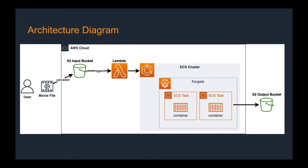We upload a file to S3. The Lambda function detects it and triggers a new processing task on the ECS service, which uses our template image to launch new processing containers. The output data is then stored back onto S3.